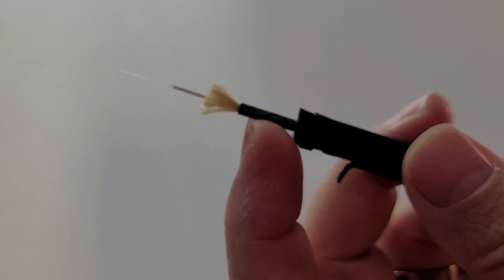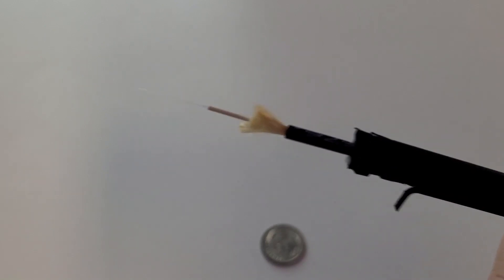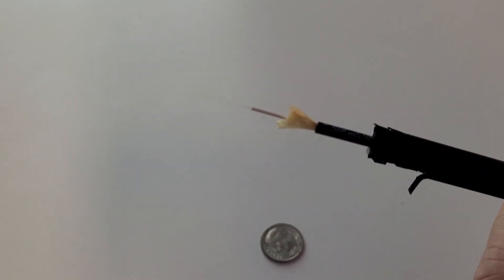Then there's an inner sheath, and then beyond that is like a cloth insulation. And then there's the actual jacket around the fiber.